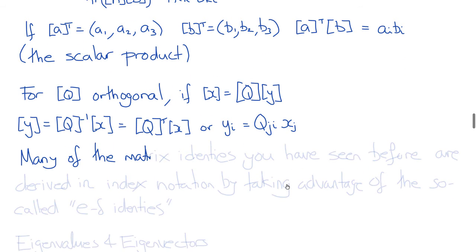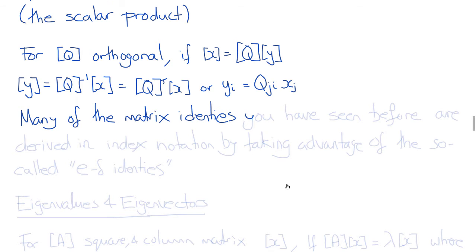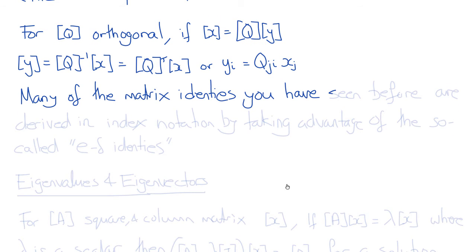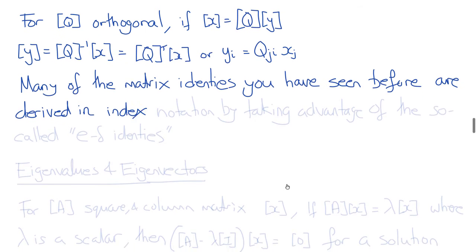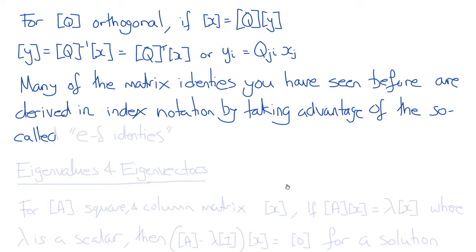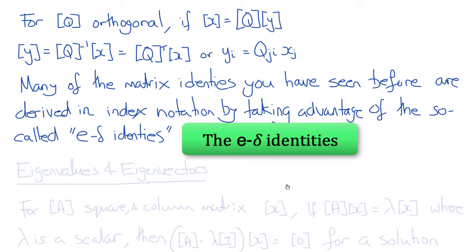Many — perhaps all — of the matrix identities you've seen before can also be derived in index notation by taking advantage of the so-called e-delta identities. I'll ask you to look at a handout of these e-delta identities and review them. These are algebraic tools that enable you to derive matrix relations using index notation, which you may not have seen before.